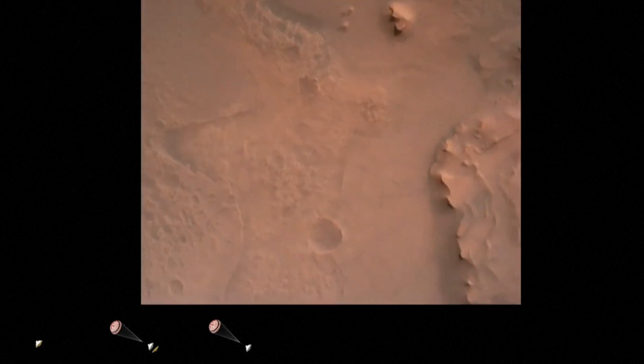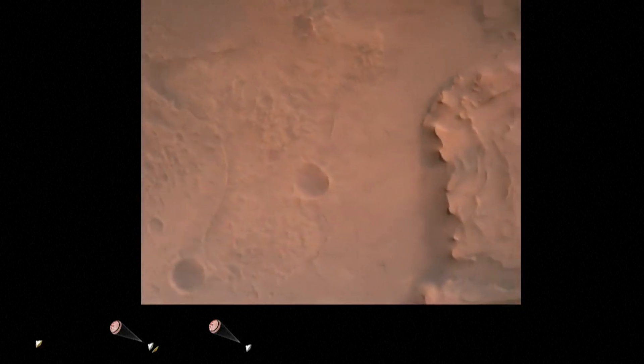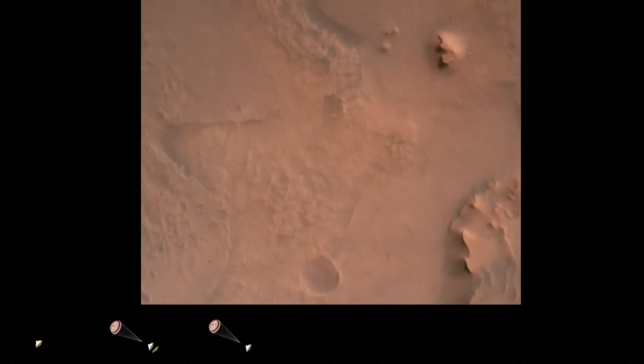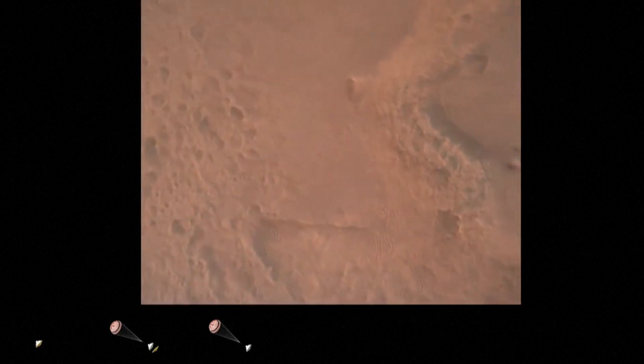Perseverance is continuing to descend on the parachute. We are coming up on the initialization of terrain relative navigation and subsequently the priming of the landing engines. Our current velocity is about 90 meters per second at an altitude of 4.2 kilometers.